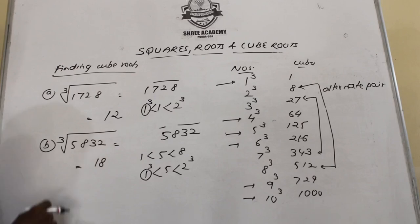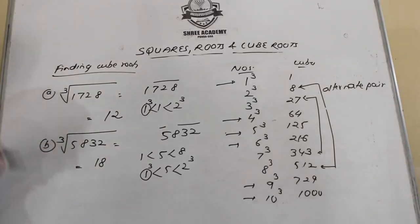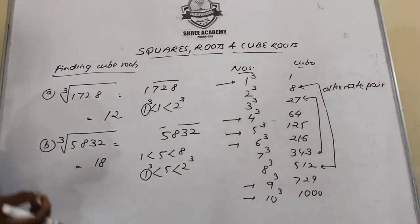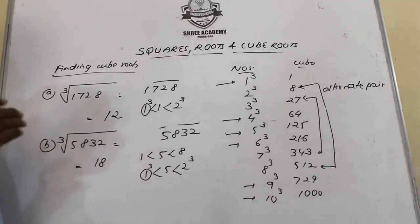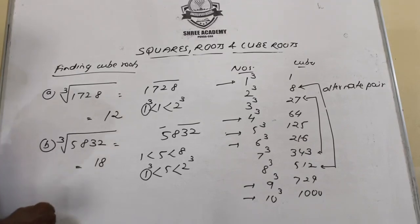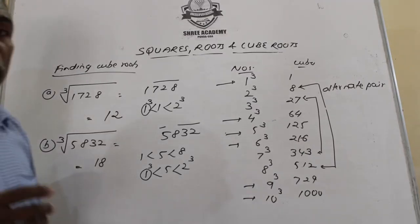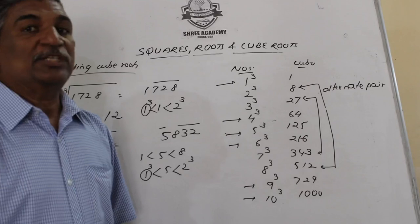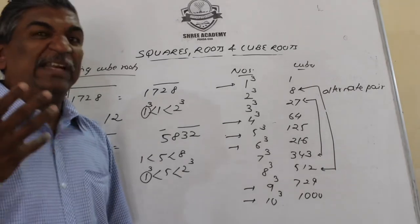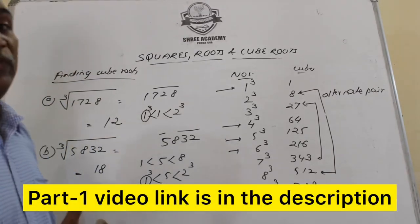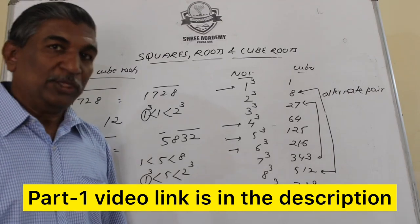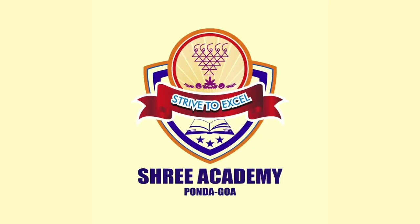If you memorize and practice this method, you can find cube roots in a maximum of five seconds. This will be very useful when doing surface areas and volumes, where you often need to find a radius from r³. Keep practicing these tricks.